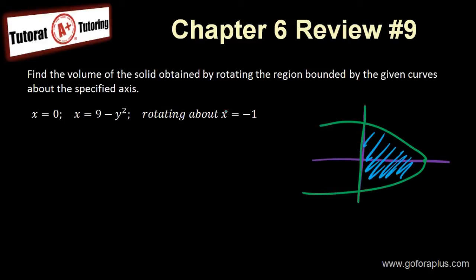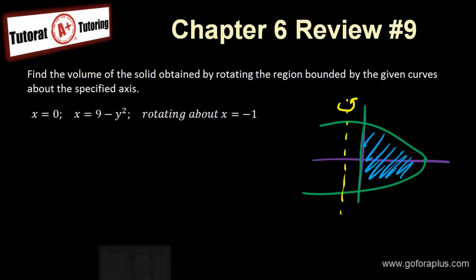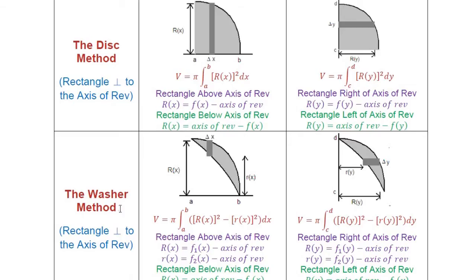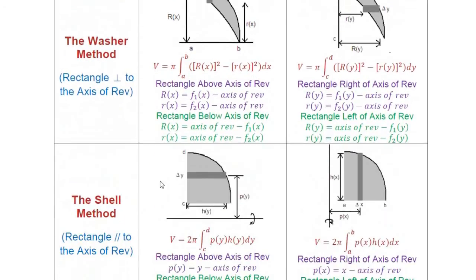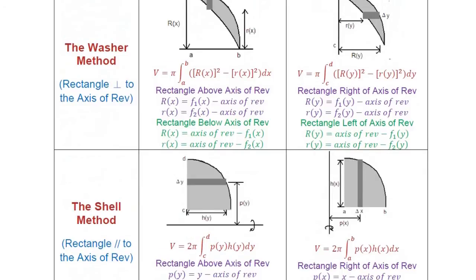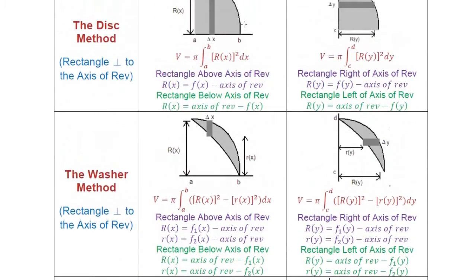Now I'm rotating about the x equals minus 1 axis, which is somewhere here. So there's a gap between the axis and the area. In this case, I must choose either the washer method or the shell method. It won't be the disk method, because with the disk method there's no gap between the axis and the region.